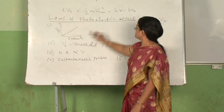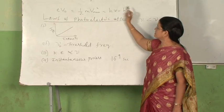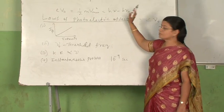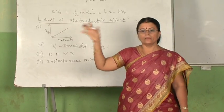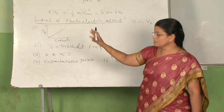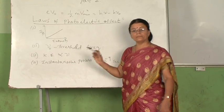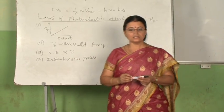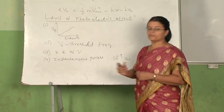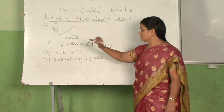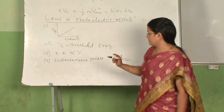The third law can be explained directly from the equation. It is very obvious that kinetic energy is directly proportional to the frequency of the incident photon, and there is no intensity term in this equation. So kinetic energy of the emitted photoelectron is directly proportional to the frequency of incident photons and is independent of intensity of incident light. This was also studied yesterday with a graph.